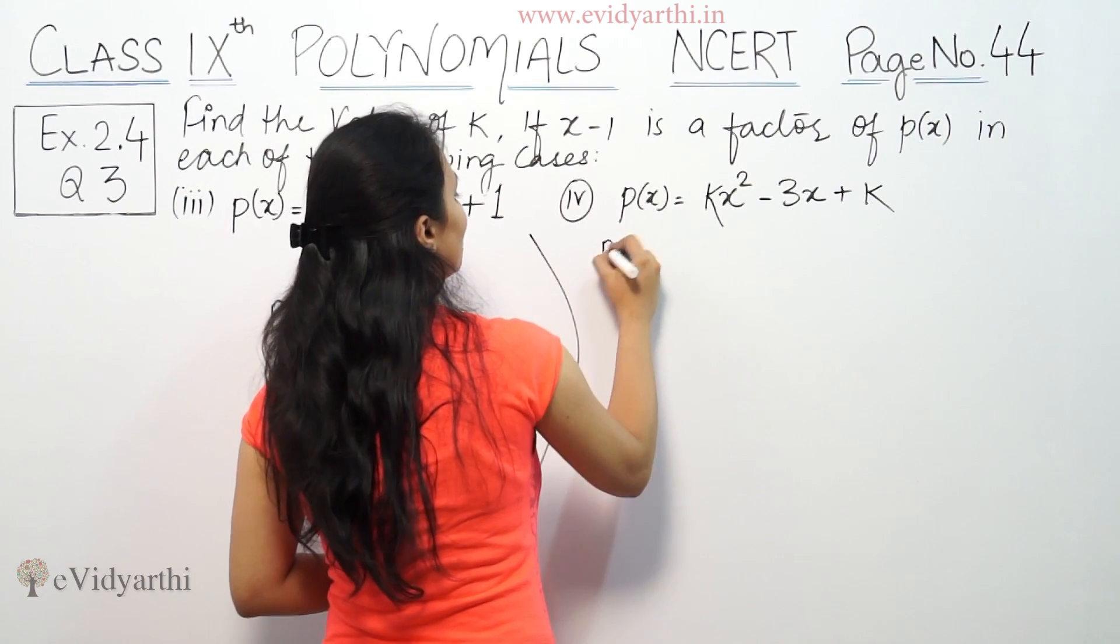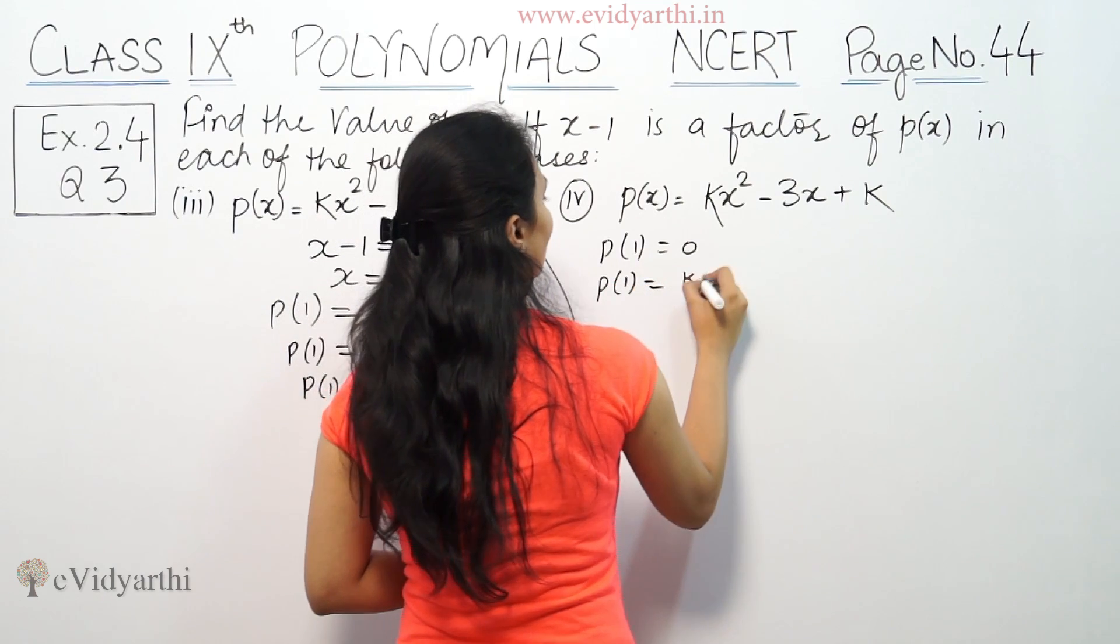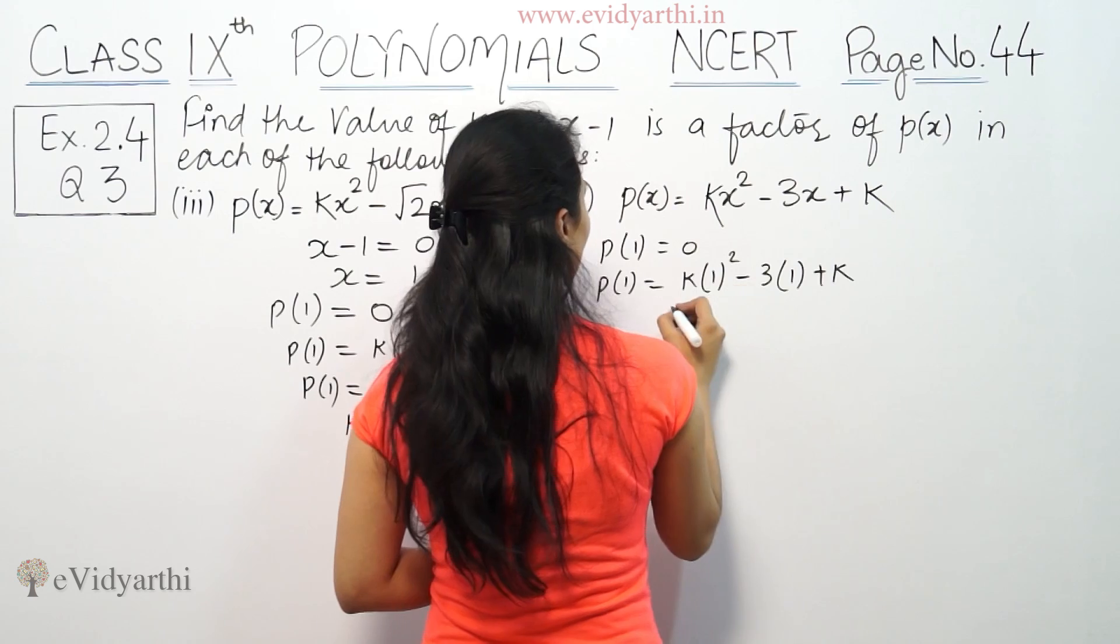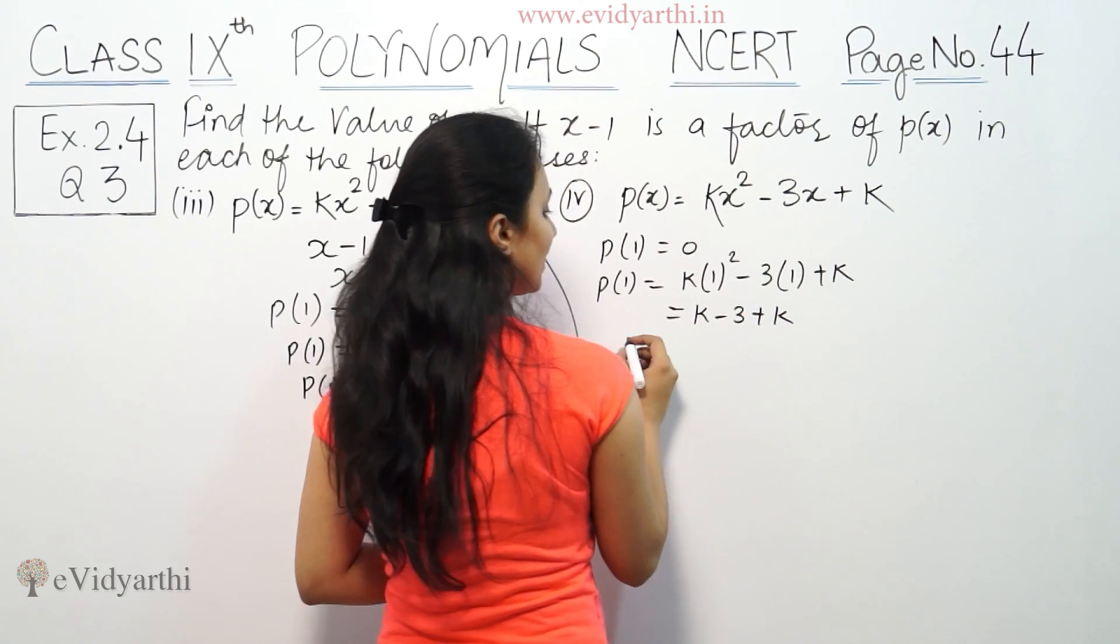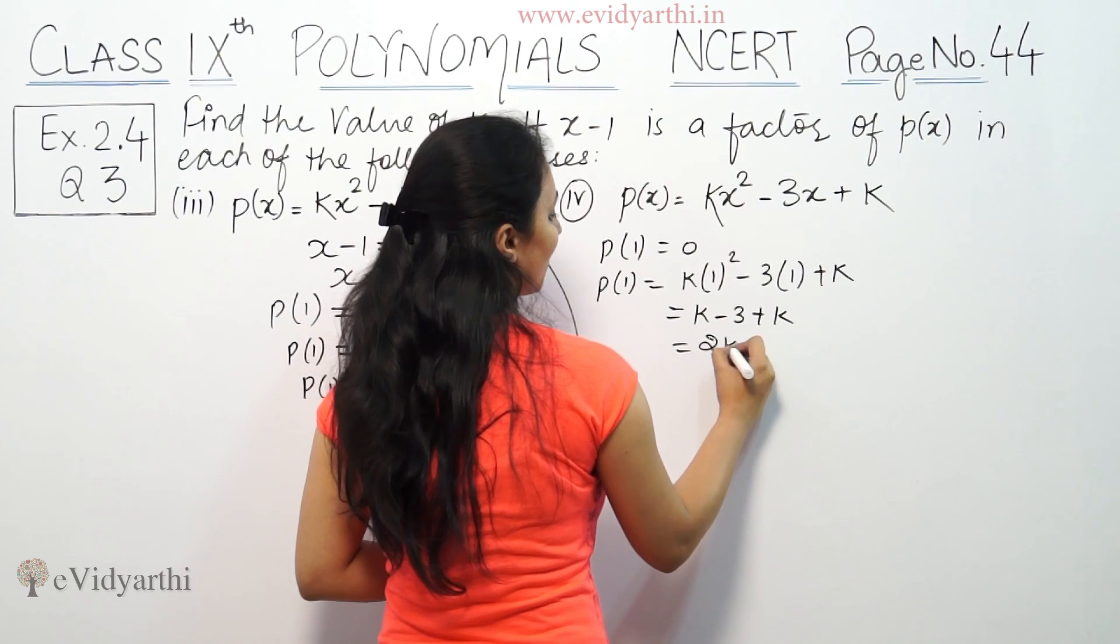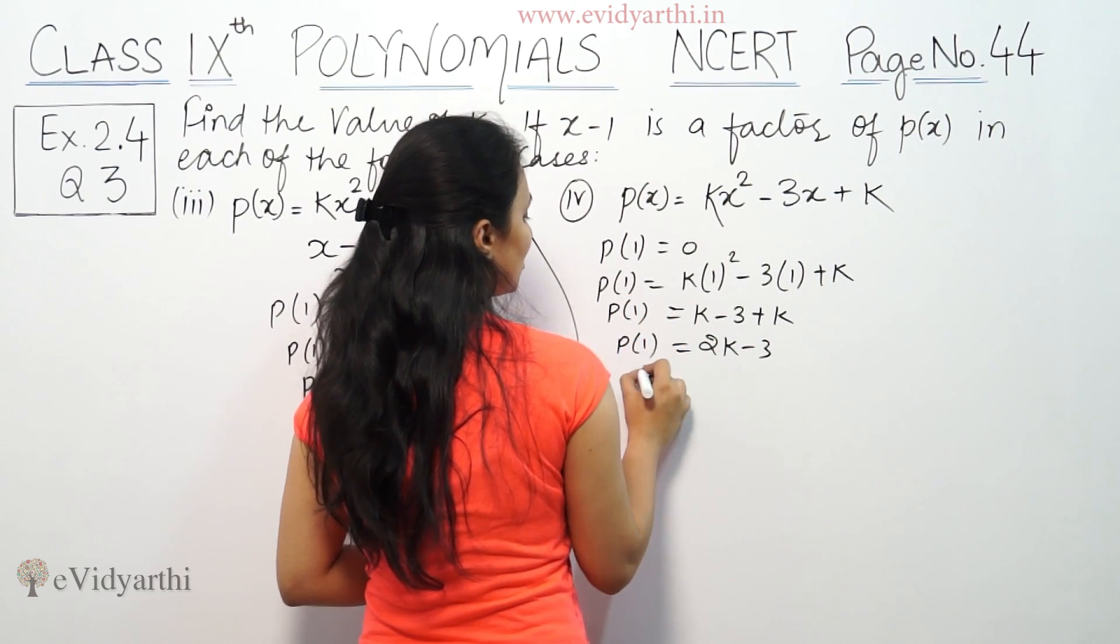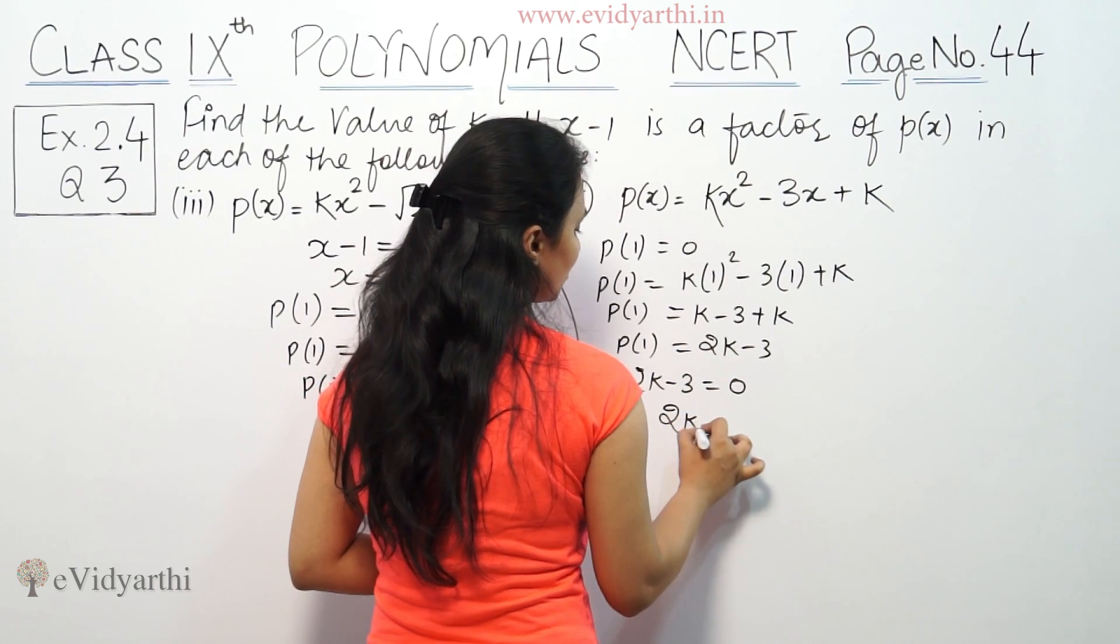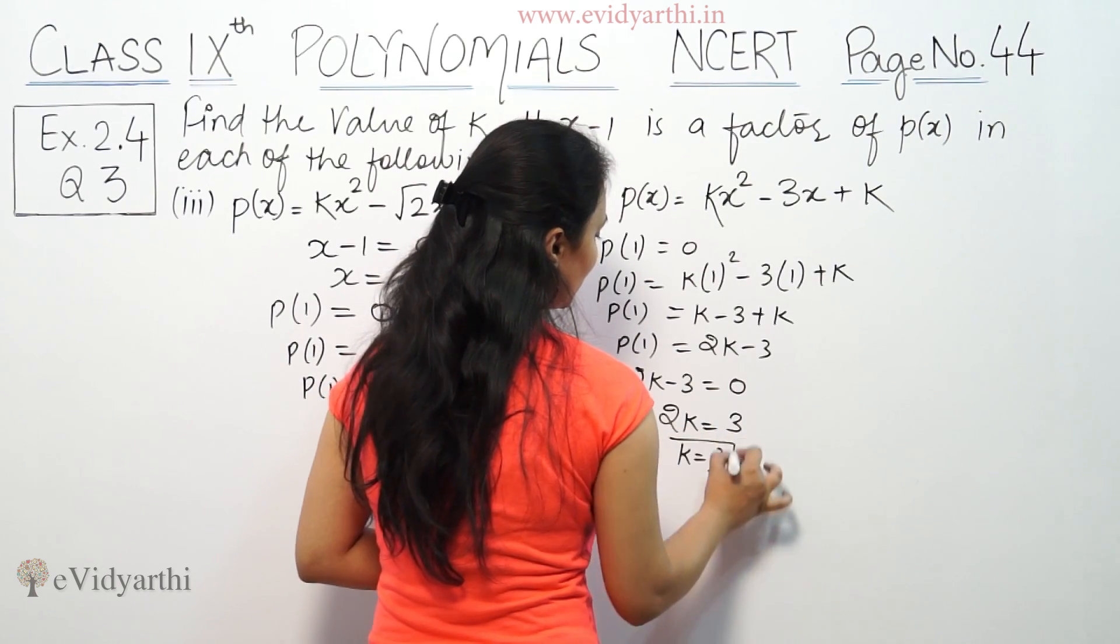Same way here, p(1) is 0. Setting up the equation, and this should equal 0. So 2k = 3, and k will be equal to 3/2.